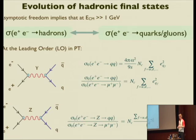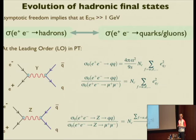Yesterday we talked about the evolution of the initial state — what happens to the proton as it approaches the collision. Today we discuss what happens to the last part of the factorization expression: the evolution of the quarks and gluons produced towards stable physical hadronic states. To make life simpler, since we're dealing with final state evolution, we look at e+ e- going to hadrons, where there is no complication from the initial state.